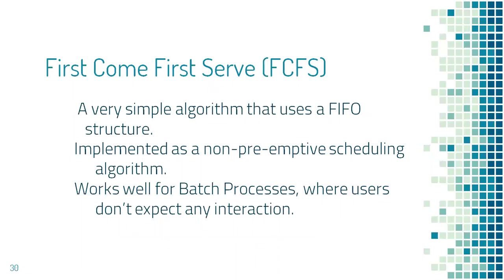Let us start with the first scheduling algorithm, first come first serve scheduling algorithm. This is a very simple algorithm. It will maintain the queue of processes waiting for CPU allotment in FIFO structure — first in, first out. Whichever process enters the ready queue first will get the CPU first. This algorithm is a non-preemptive scheduling algorithm, meaning once the CPU is allotted to a process, it keeps the CPU till it completes its entire CPU burst time. This algorithm suits for batch processes where the user does not expect too much interaction with the computer.